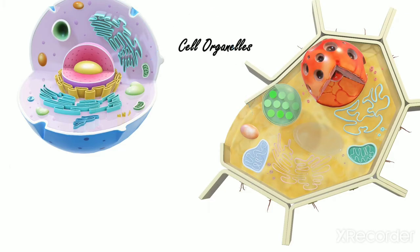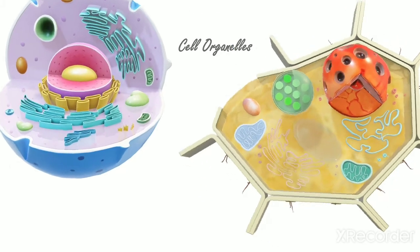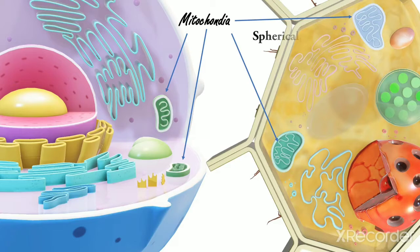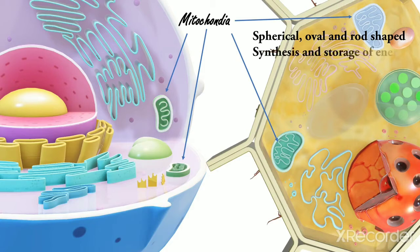Cell organelles. The main cell organelles present in the cytoplasm are: Number one, Mitochondria. They may be spherical, oval, or rod shape. They are present in animal as well as in plant cells and are responsible for the synthesis and storage of energy released by the oxidation of food. They are also called powerhouse of the cell.